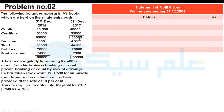So we have the net amount that is Rs. 83,000 closing. We have capital opening and closing. Now we need to create a statement of affairs. A has been regularly transferring Rs. 600 a month from his business banking account to his private banking account by way of drawings.